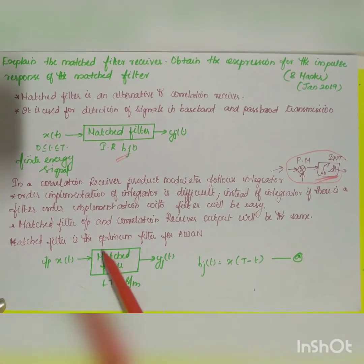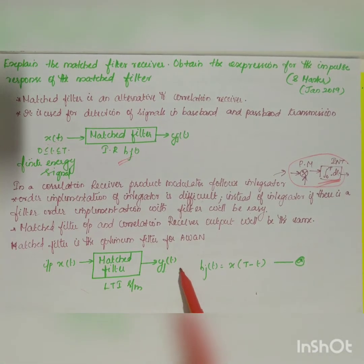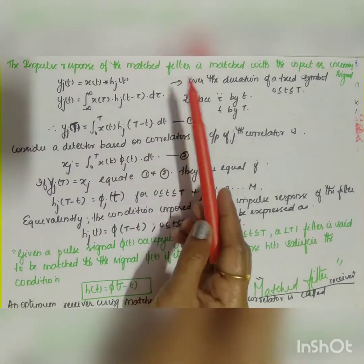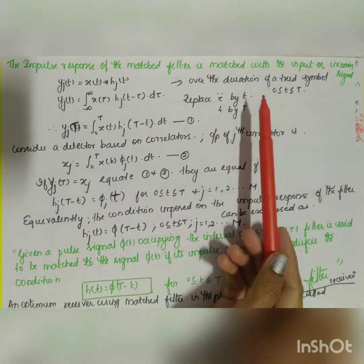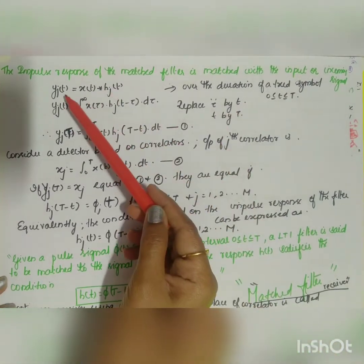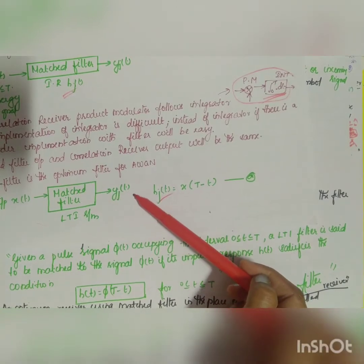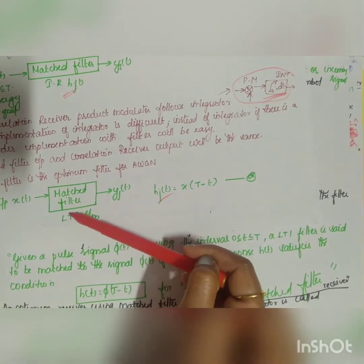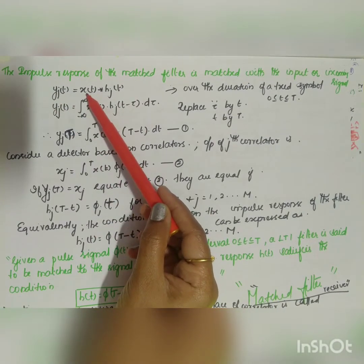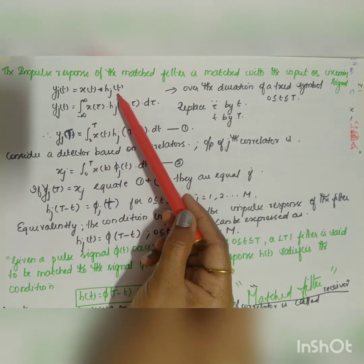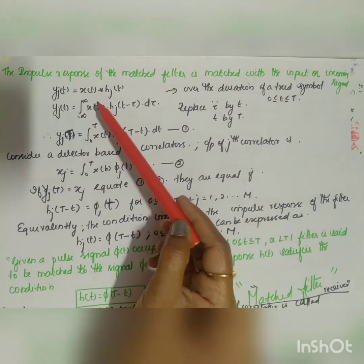For input x(t) passing through a linear time invariant system, the output is y_j(t). The impulse response of the matched filter is matched with the incoming signal — that's why it's called a matched filter. The output y_j(t) is equal to the convolution of x(t) and h_j(t), written as: y_j(t) = x(t) * h_j(t) over the duration of the transmitted symbol, 0 to T.